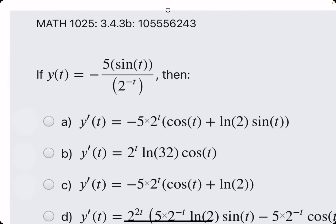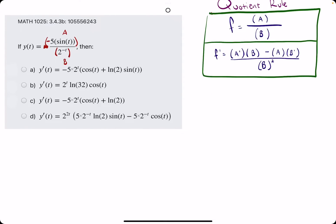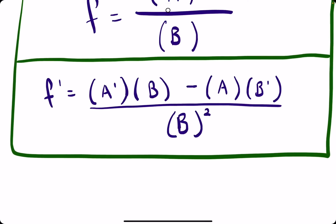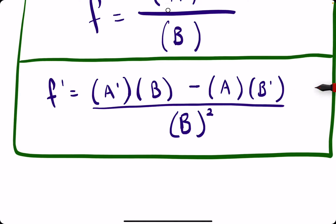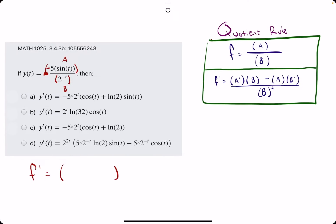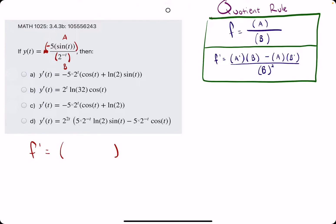We have this function. I'm going to go ahead and group the negative with the numerator, calling this a. The denominator is b. So f prime always starts with a prime. So a prime is the derivative of a, which is negative 5 sine of t. The derivative of negative 5 sine of t is negative 5 cosine of t. And then b comes next.